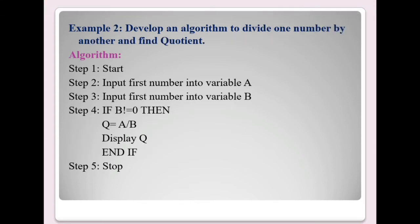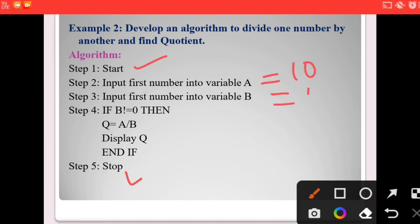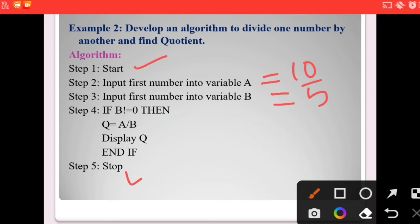Let's see one more example. In example 2, we need to develop an algorithm to divide one number by another number and find the quotient. Here, we perform a division operation, so we need to take two inputs from the user. Start, and then end. We take two inputs: A = 10, B = 5. We check the condition: if B ≠ 0, then Q = A / B.